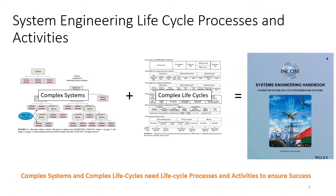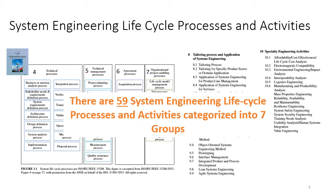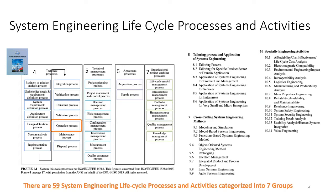The System Engineering Handbook has codified and collected all of the best practices for developing complex systems in a complex life cycle. The System Engineering Handbook has identified 59 processes and activities that are grouped into seven groups. This video covers the technical processes group and specifically the operation process.